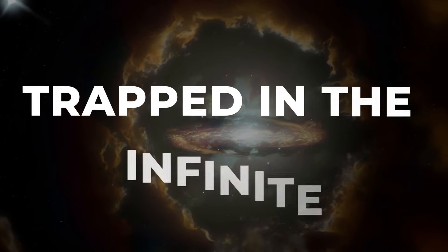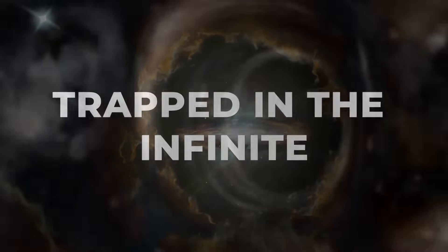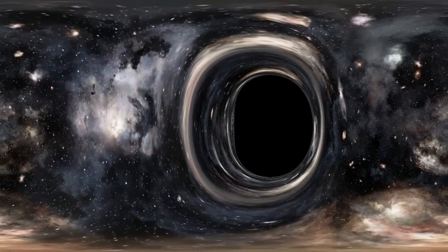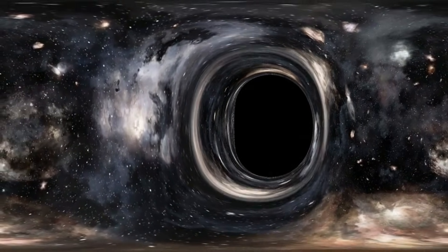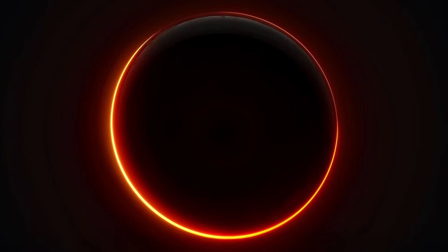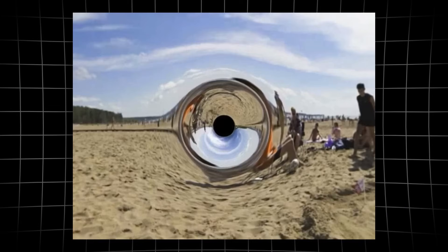A black hole isn't just a hungry monster in deep space. It's a region where gravity is so intense, nothing, not even light, can escape. There's a boundary called the event horizon. Cross that line, and you're gone for good. But here's the twist. On the inside, space and time get scrambled.